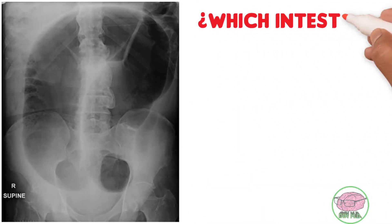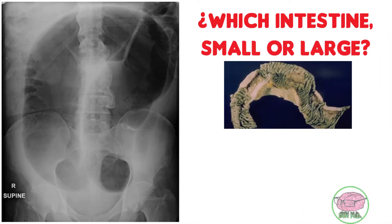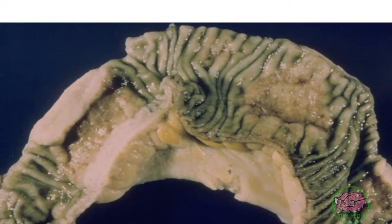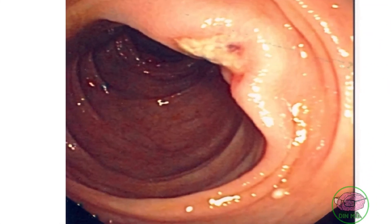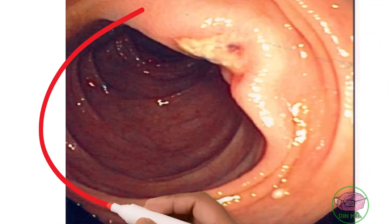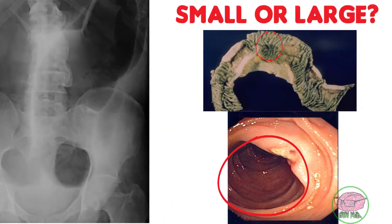But which intestine — small or large — contains this gas? The small intestine has folds or wrinkles running from one wall to the other; they are thin and close together. The large intestine has no such folds but instead has haustra — little pouches.